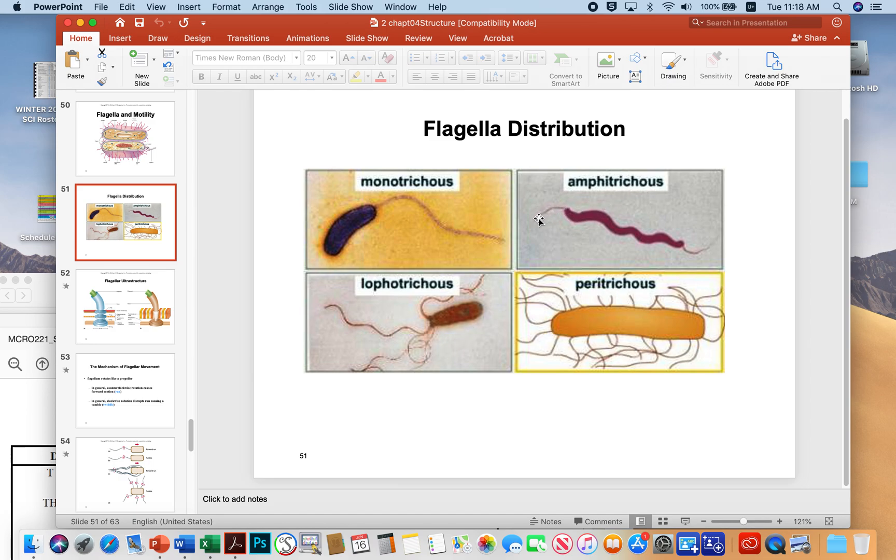Amphitrichous is where the microbe has flagellum here and flagellum here, one at each pole. These don't fight against each other. If one's on and spinning, that'll send the microbe in one direction. Then if the microbe encounters something bad, that stops the flagella that's working and the other one will kick in and push the microbe in the other direction.